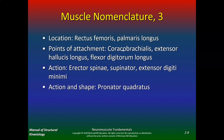What about the point of attachment? Coracobrachialis goes from the coracoid process to the brachialis. Extensor hallucis longus — it's going to extend the big toe. What's the action? The erector spinae work on the low back. Supinator — it supinates the arm. Action and shape: pronator quadratus tells you both the action and the shape of it.